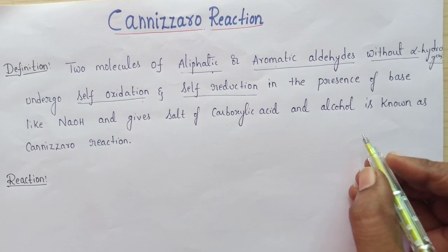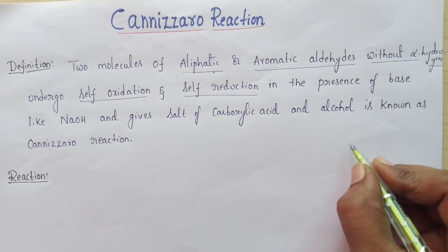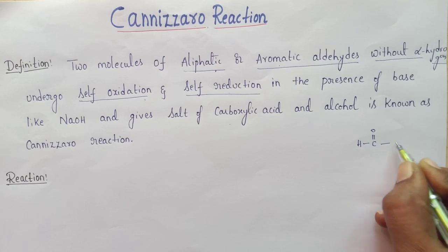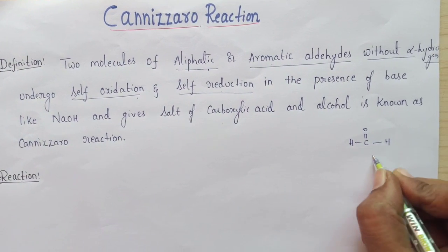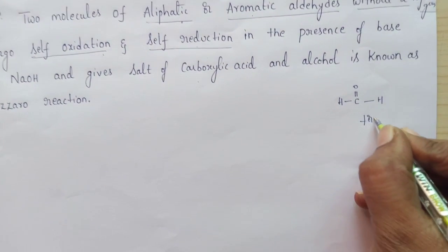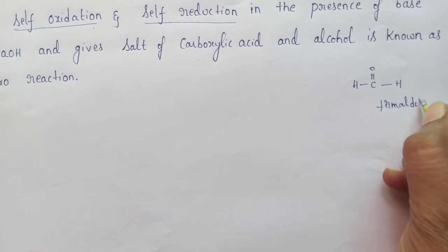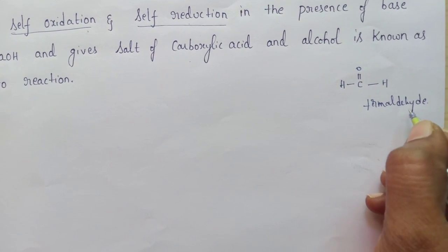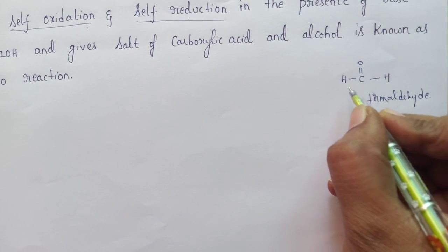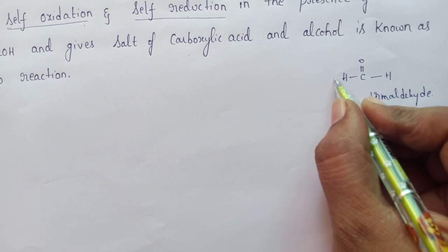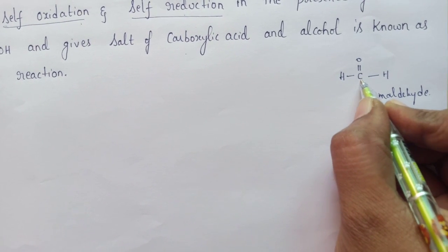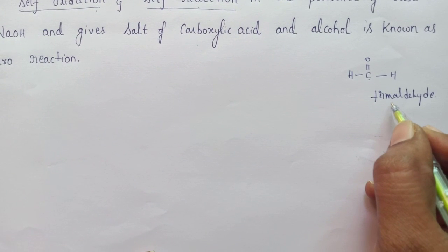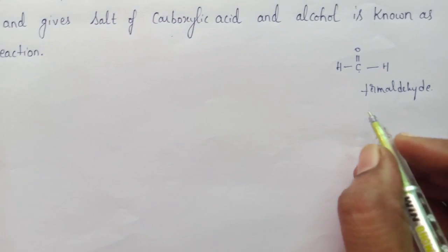Consider the examples of aliphatic and aromatic aldehydes without alpha hydrogens. The best example of an aliphatic aldehyde is formaldehyde. This is the structure of formaldehyde. Formaldehyde comes under the category of an aliphatic aldehyde without alpha hydrogens — it does not possess any alpha hydrogens attached to the carbonyl carbon.